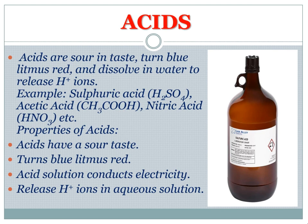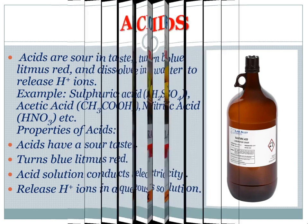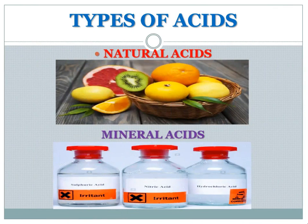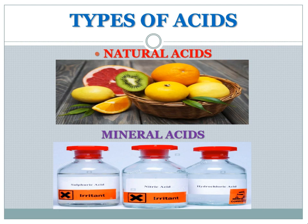There are two types of acids: natural acids and mineral acids. Natural acids are found in fruits, vegetables, and solutions like turmeric. Mineral acids include sulfuric acid, nitric acid, and hydrochloric acid. Carbonic acid is also a mineral acid but is weak, so it is placed in the natural acid classification. We will discuss each type in depth as given by the NCERT.